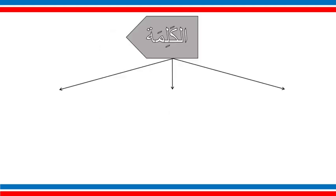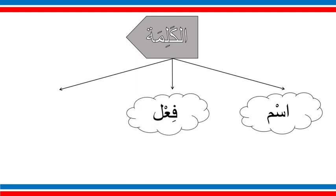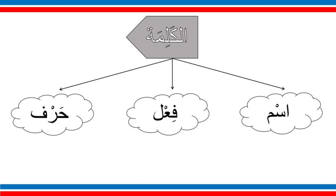Any word in the Arabic language will be one of three types. The first type, al-naw' al-awwal, is 'ism'. Ism in Arabic means name and noun — here we are talking about noun. So a word, al-kalima, can be ism (noun), or fi'il (verb), or harf. In Arabic, harf means a letter but also refers to something similar to prepositions.